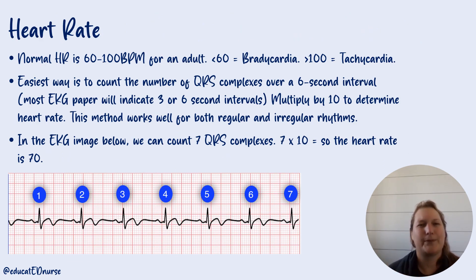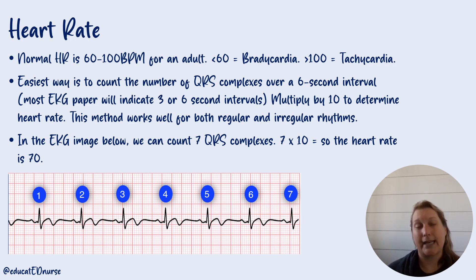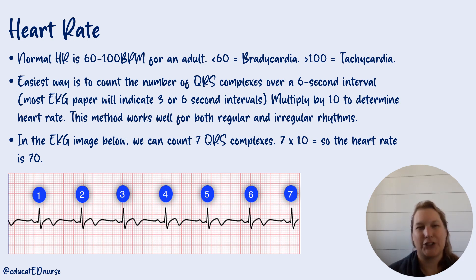Heart rate: a normal heart rate is between 60 and 100 for an adult. Less than that would be bradycardic; greater than 100 would be tachycardic. The easiest way to figure that out is to count those QRS complexes over a six-second interval. Most EKG paper will specify if it's three or six seconds — there are usually little hash marks on the top of the paper. Count your QRS complexes in your six seconds and multiply by 10, and that gives you your heart rate for a minute. For example, on this EKG there are seven QRS complexes — seven times 10 is 70.